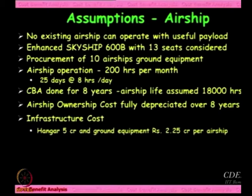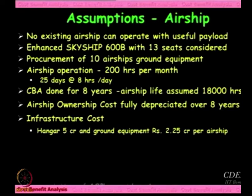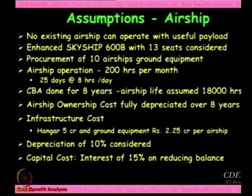Regarding infrastructure, we said let us invest 5 crore rupees in building a hangar at Haridwar. For every airship, apart from the initial cost, there will be 2.25 crores for the support equipment, the mast, etc. These numbers are not assumptions — they have come from actual quotations. Today one might say 5 crores is too less for building a hangar, but at that time we made enquiries and got this number. Similarly, depreciation of 10% and to buy these airships one has to take a loan — we assume 15% interest on reducing balance for that particular loan.